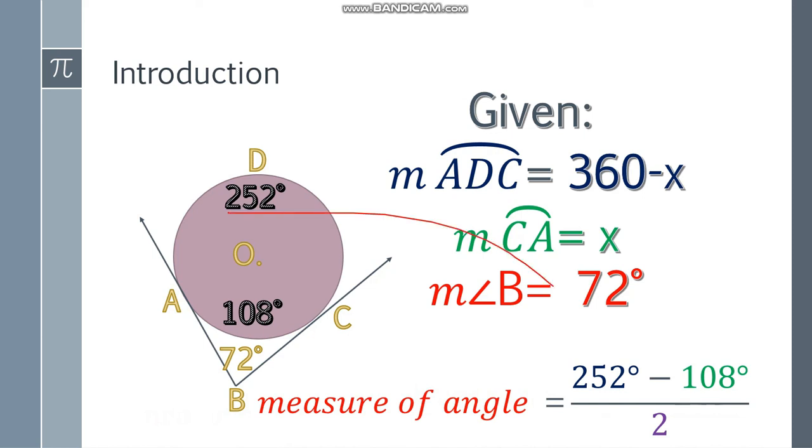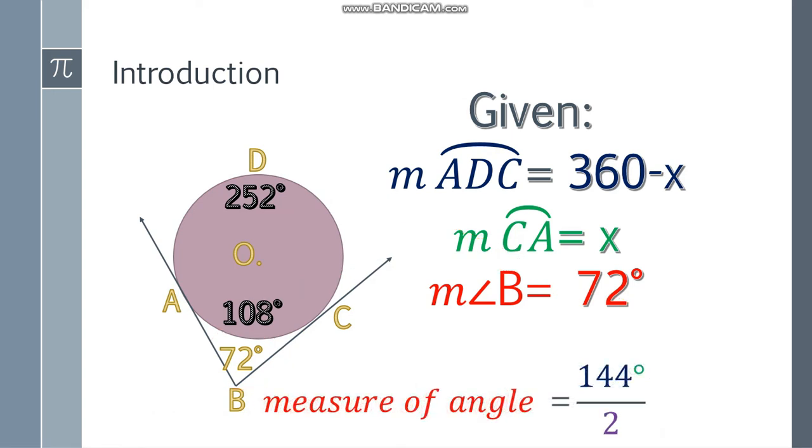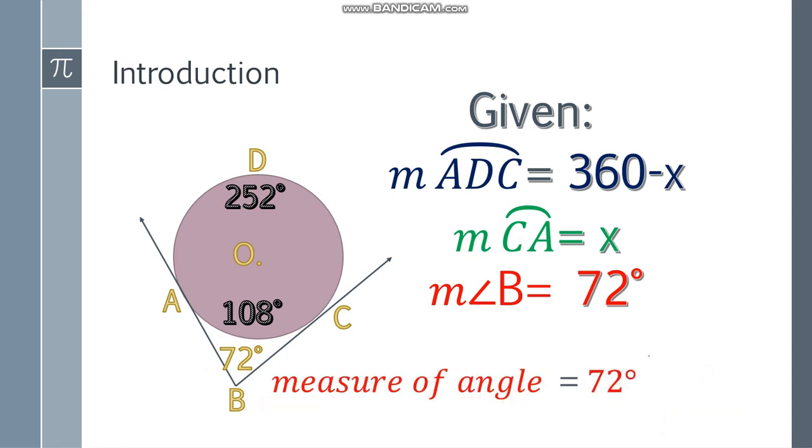So we have 252 degrees here, 108 degrees here, and let's simplify it. The answer should be 72 degrees. 252 minus 108, that will be 144 degrees. You divide it by 2, and you get an answer of 72 degrees. And we are correct.